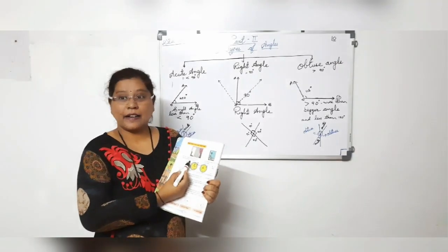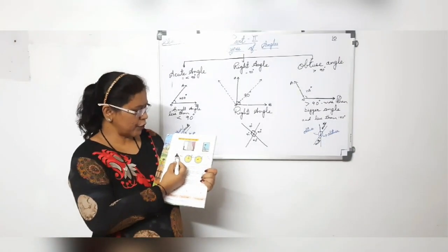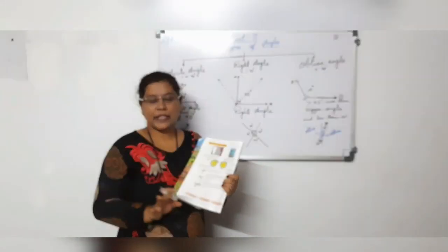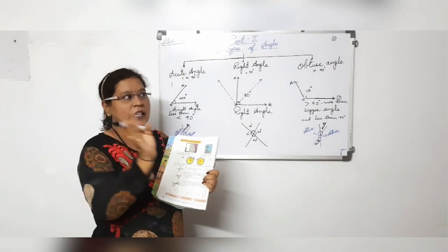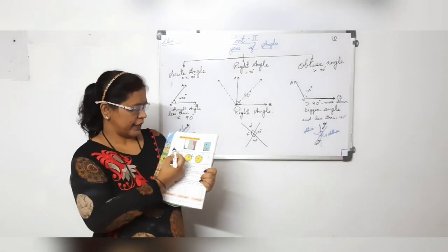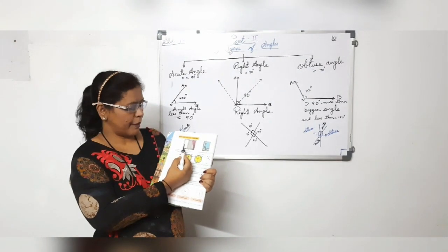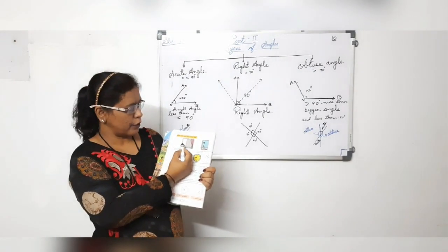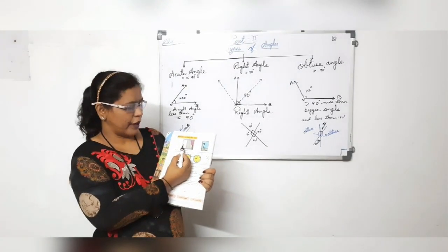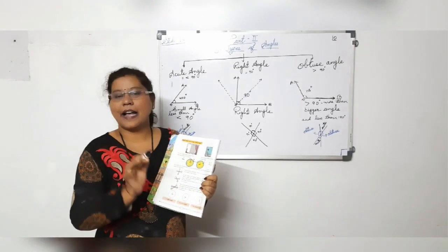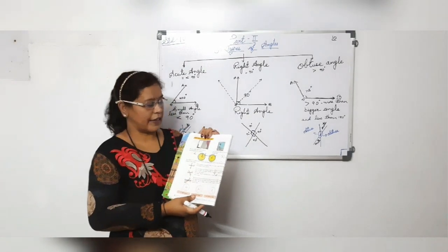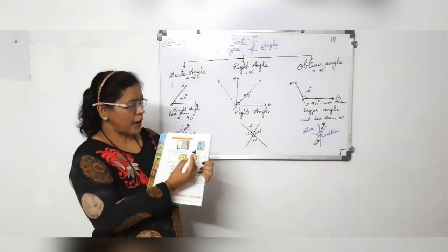We see a right angle between two adjacent sides of a window. You must be sitting in a room — if you have a look around yourself, there is a window. When two adjacent sides of a window join at one point, it makes a right angle. A right angle is always 90 degrees.